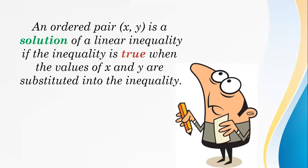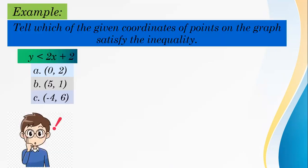An ordered pair (x, y) is a solution of a linear inequality if the inequality is true when the values of x and y are substituted into the inequality. Now we have an example.